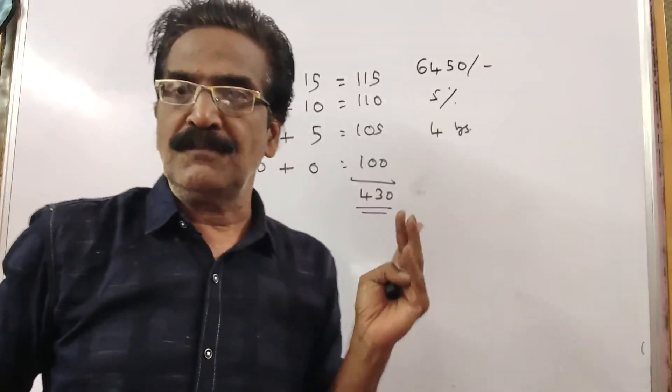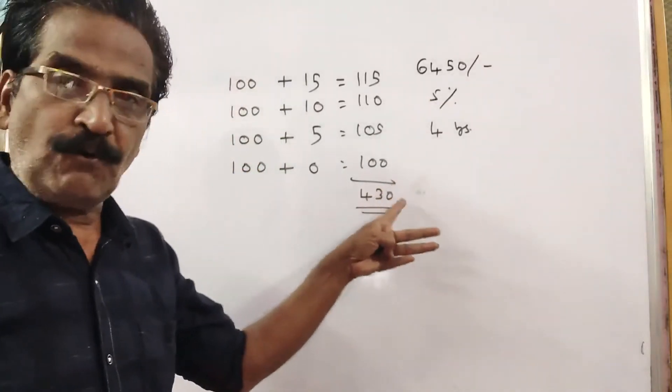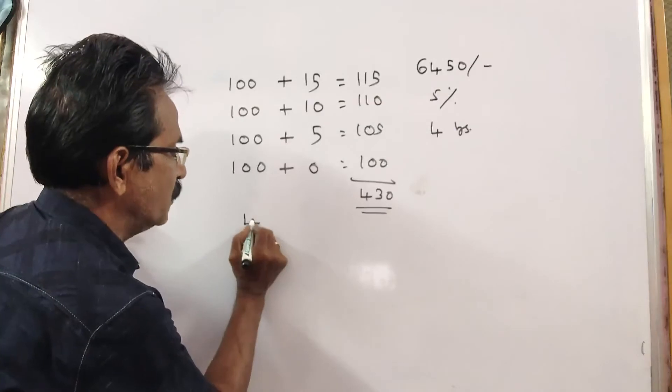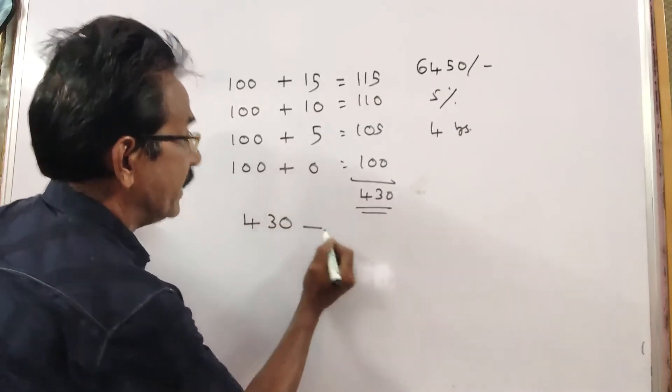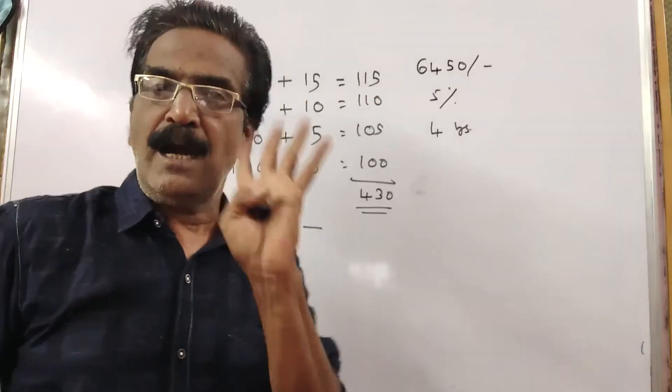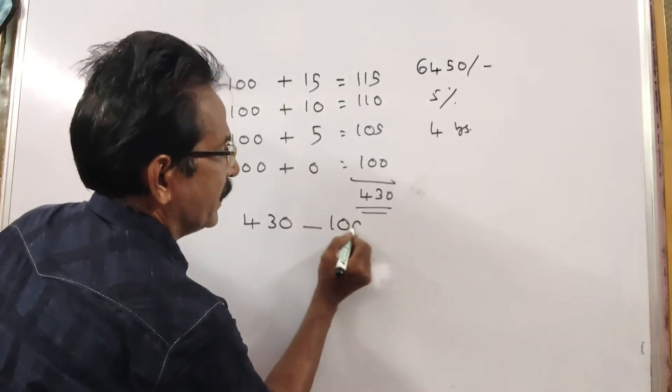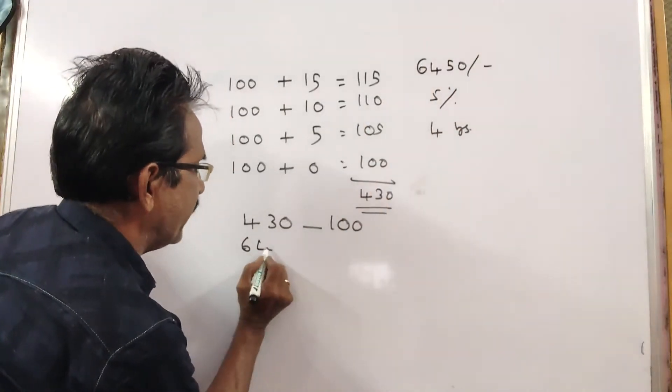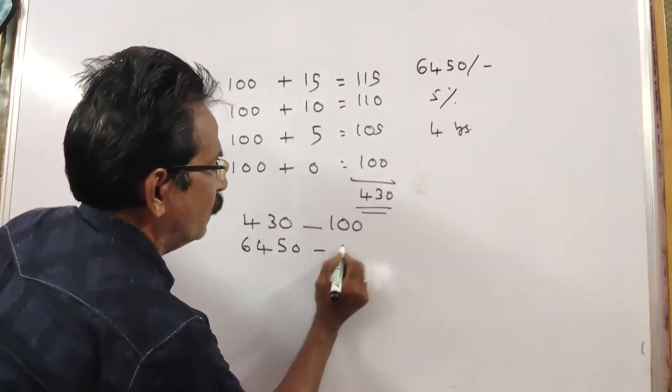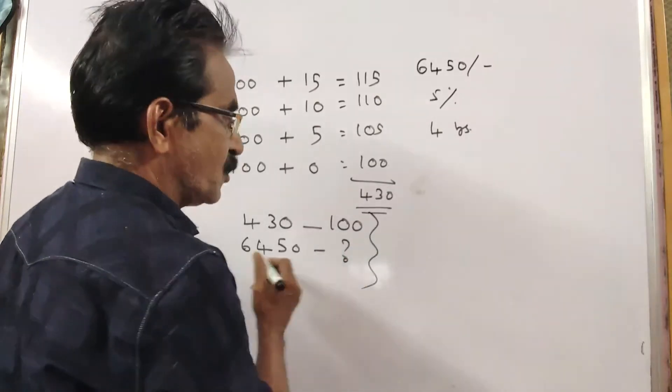If the total due amount is Rs. 430, the installment must be 100. If the total amount is Rs. 6450, then what could be the installment?